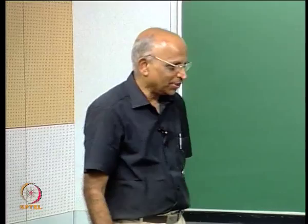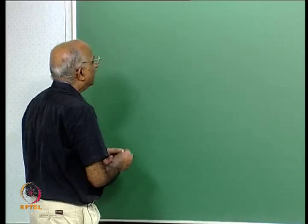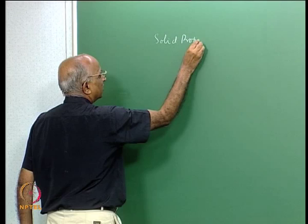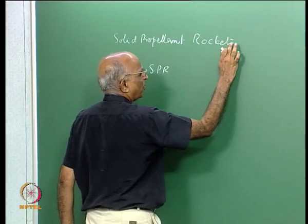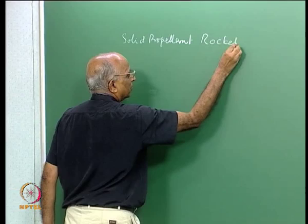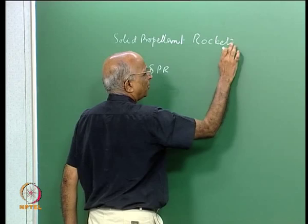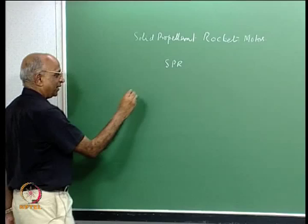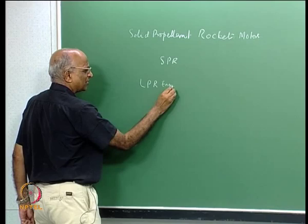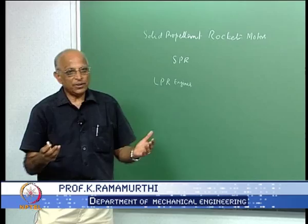Good morning. Today we will finish our discussions on solid propellant rockets. Something amusing: solid propellant rockets, known as SPR, are also known as solid propellant rocket motors. Whereas liquid propellant rockets are known as liquid propellant rocket engines. In many textbooks, the solid propellant rocket is referred to as a motor, whereas the liquid propellant rocket is referred to as an engine. What do you think would be the reason for this?